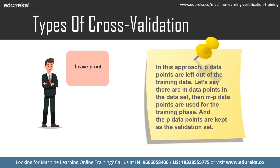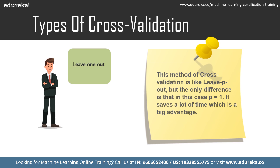In leave-P-out cross validation, P data points are left out of the training data. Given M data points in the data set, M-minus-P points are used for training and P points are kept as the validation set. This technique is exhaustive because the process is repeated for all possible combinations in the original data set, and the error is averaged across all trials. It becomes computationally infeasible for large datasets. Leave-one-out cross validation is similar, but P equals one — it saves a lot of time, though it can still be slow for very large data.